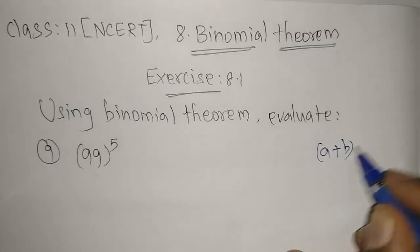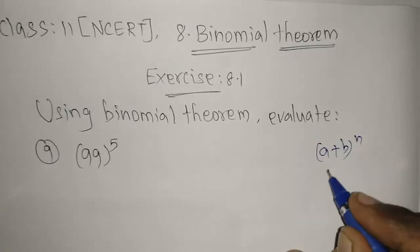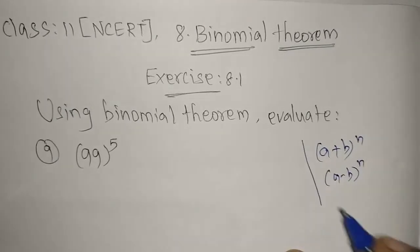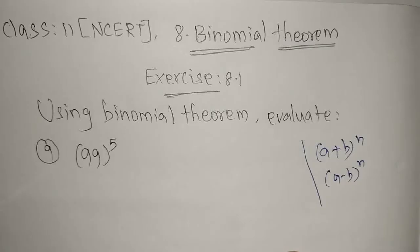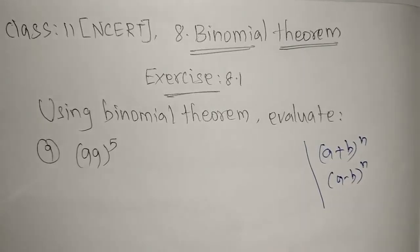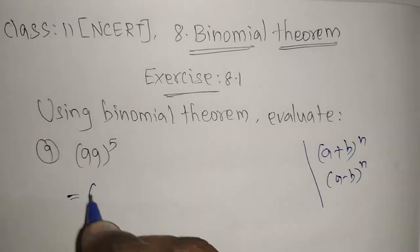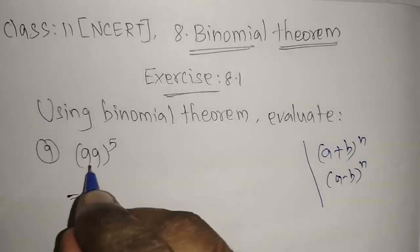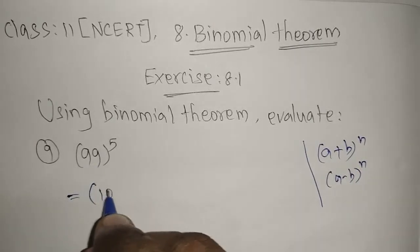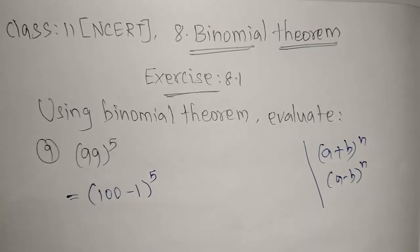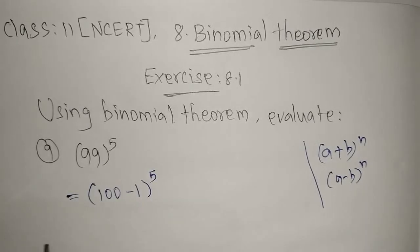Using binomial theorem, we need the format (a + b)^n or (a - b)^n. So we change the given question into one of these forms. We write 99 as 100 minus 1, so the expression becomes (100 - 1)^5, which is now in the form (a - b)^n.